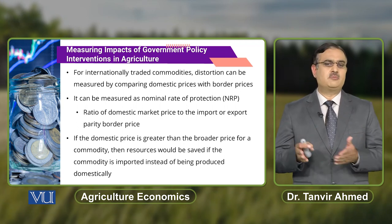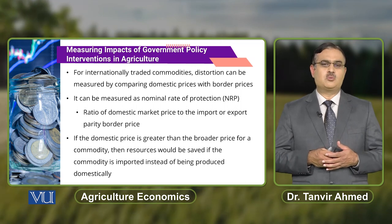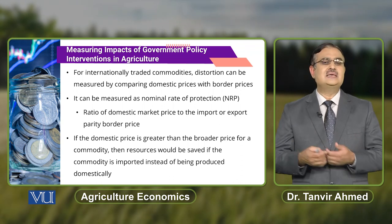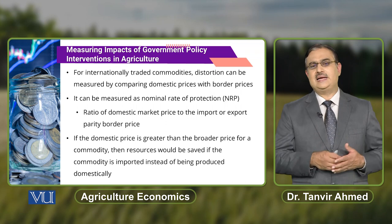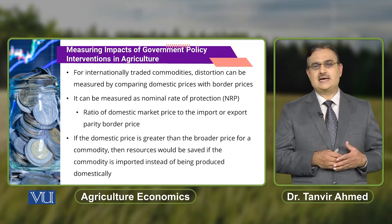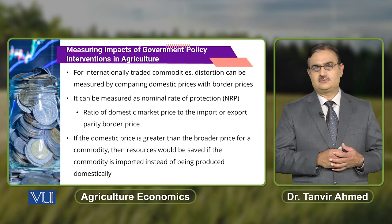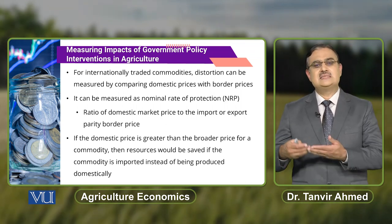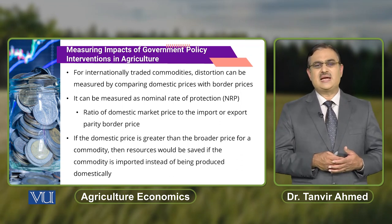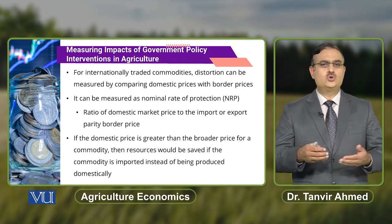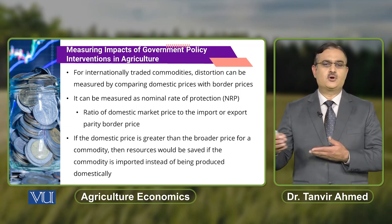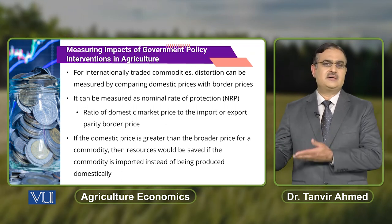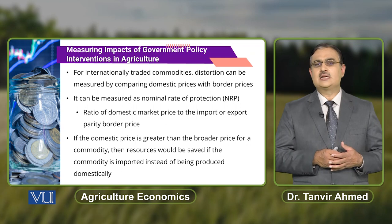If the domestic price is greater than the border price for a commodity, it indicates that resources at the domestic level can be saved if the commodity is imported instead of being produced domestically. If the domestic price is less than the border price, this indicates that we should use resources for the production of that particular commodity and not pursue imports.